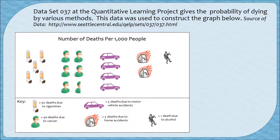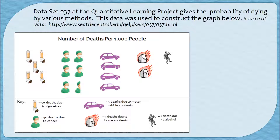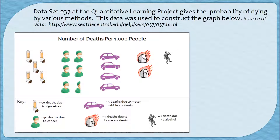In this pictograph, we have deaths per 1,000 people. Cigarettes represent deaths due to cigarettes, the green surgeon represents deaths due to cancer, purple cars represent motor vehicle accident deaths, a house on fire represents home accident deaths, and an old-timey gentleman drinking represents deaths due to alcohol. Looking at the top of the graph, it looks like the most likely way to die is by cancer, since we have about five and a half surgeons, and the second most likely is cigarettes with five cigarettes. It also looks like you're twice as likely to die in a home accident as due to alcohol.